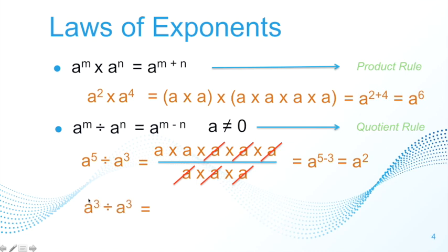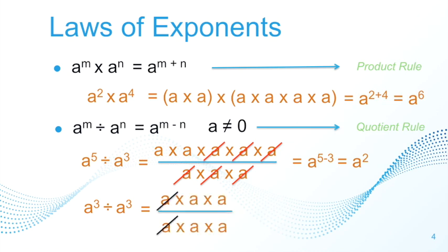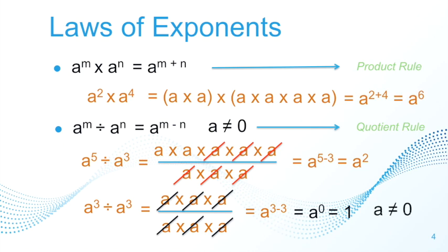What if the exponents in the numerator and denominator are the same? For example, a cubed divided by a cubed — a number divided by itself. Applying the definition of exponents and cancelling all common factors, since a is not equal to zero, the result is 1. Applying the quotient rule, that gives a to the power of 3 minus 3, which is a to the power of zero equals 1. This leads us to the zero exponent rule. Since it is derived from division, a cannot equal zero — so it is not correct to say zero to the power of zero equals 1. That condition must always be remembered.